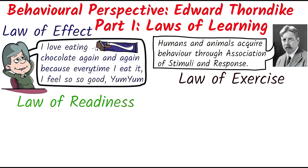For example, when we eat chocolate we get a pleasurable sensation — we feel good — and thus we want to eat it again and again. But if the chocolate doesn't produce any kind of pleasurable sensation or doesn't make us feel good, we don't want to eat that chocolate again.